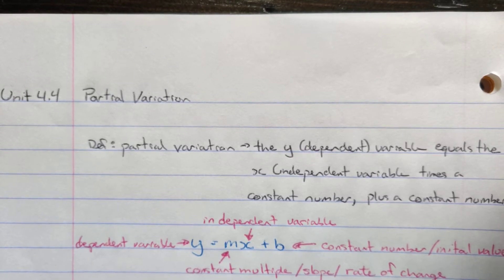Previously, we talked about direct variation when the graph was a linear relation that crossed through the y-intercept at 0. The y-axis at 0, the initial value was 0.